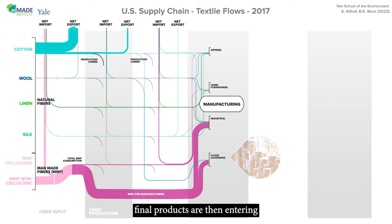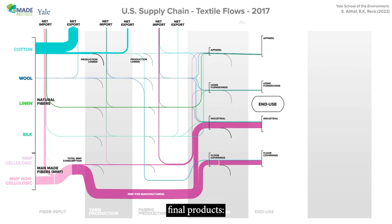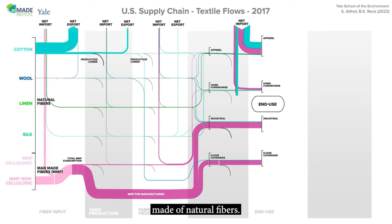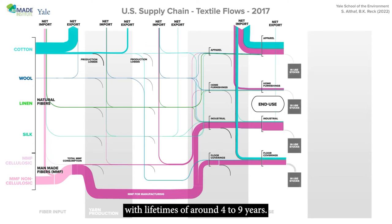The manufactured final products then enter end-use, together with substantial amounts of imported final products — imported apparel made of both cotton and man-made fibers, home furnishings made of mostly man-made fibers, and some floor coverings made of natural fibers. Textile products then remain in use as part of the in-use stocks, with lifetimes of around four to nine years.